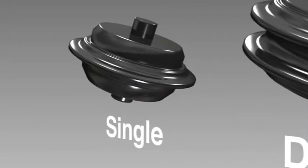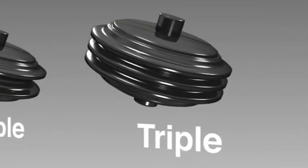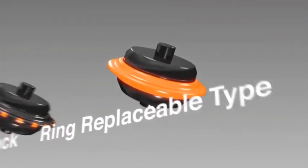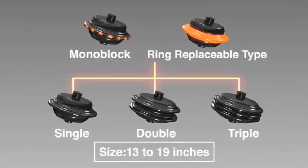Terratech's own design backloading disc cutters can be single, double, or triple in sizes which range from 13 to 19 inches. The disc cutters can be monoblock or ring replaceable type. Depending on the geological conditions, the most suitable combination of disc cutters is selected.